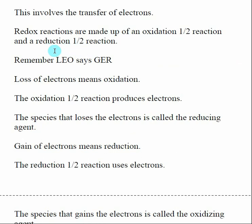It's kind of hard to remember which is oxidation and which is reduction, so there's a mnemonic device: LEO says GER. The LEO part stands for 'Loss of Electrons is Oxidation,' so if electrons are being produced, the reaction is called an oxidation. The oxidation half reaction is the one that produces electrons. The species being oxidized is also called the reducing agent, because it's causing something else to be reduced.